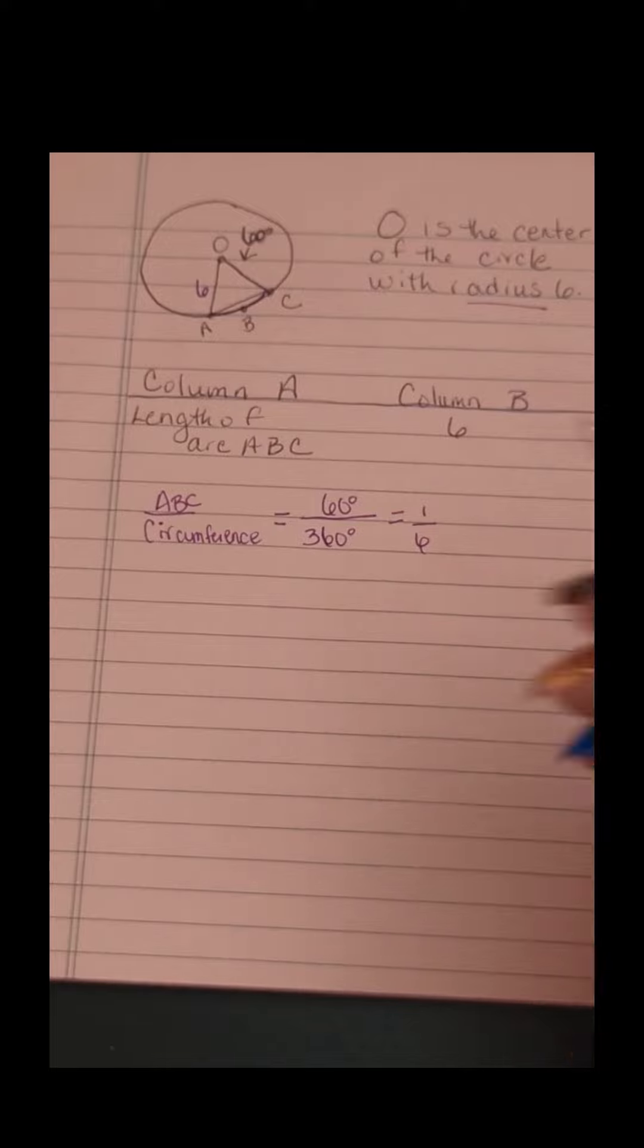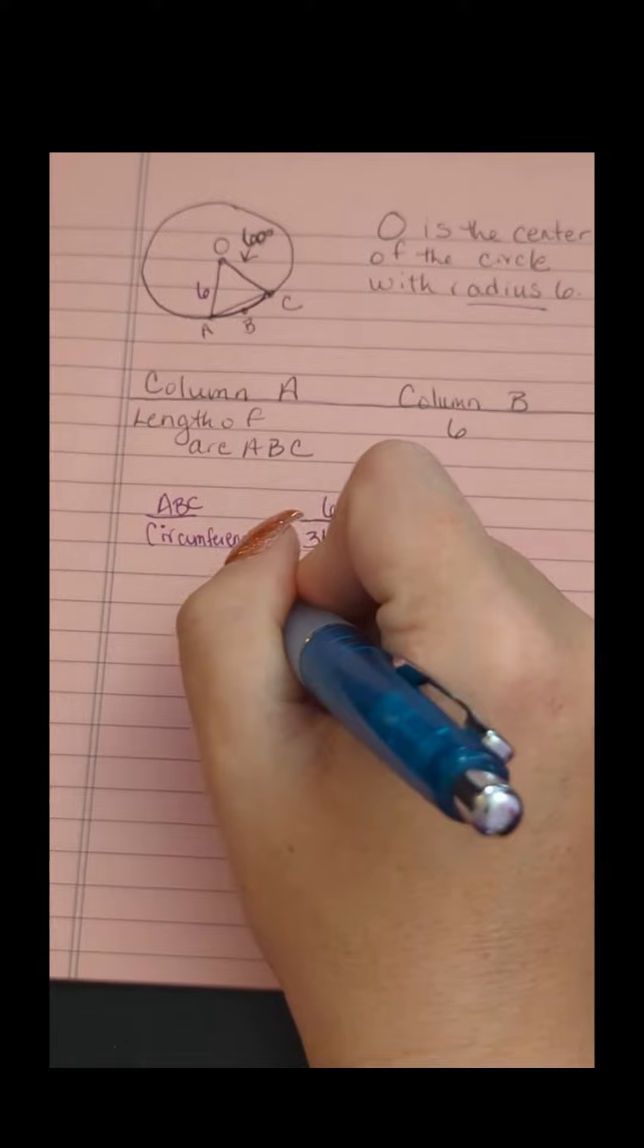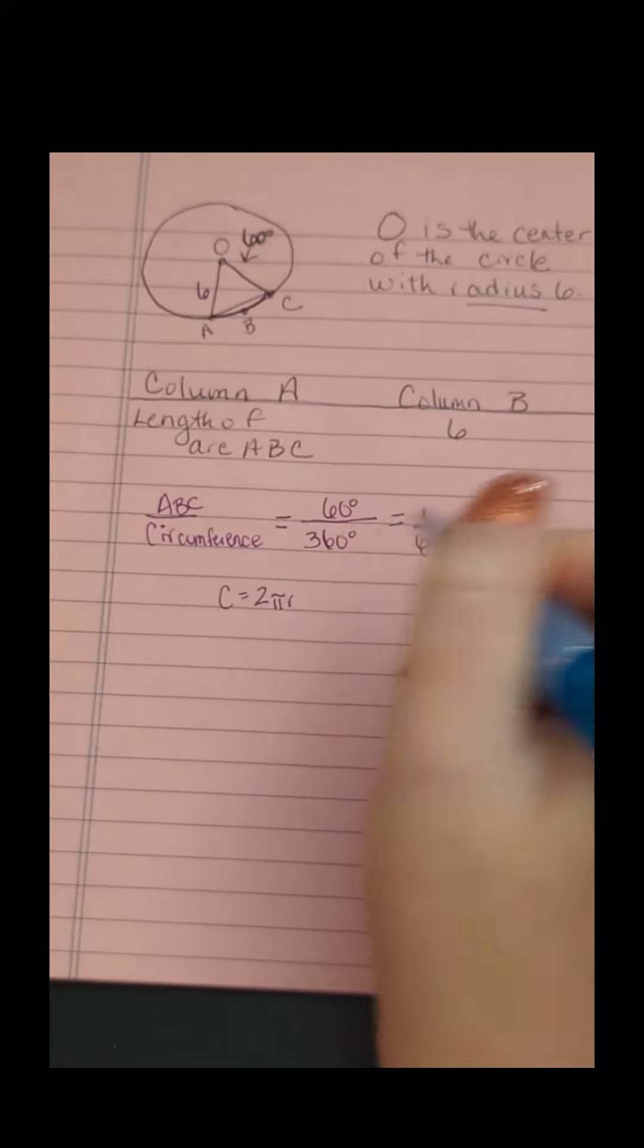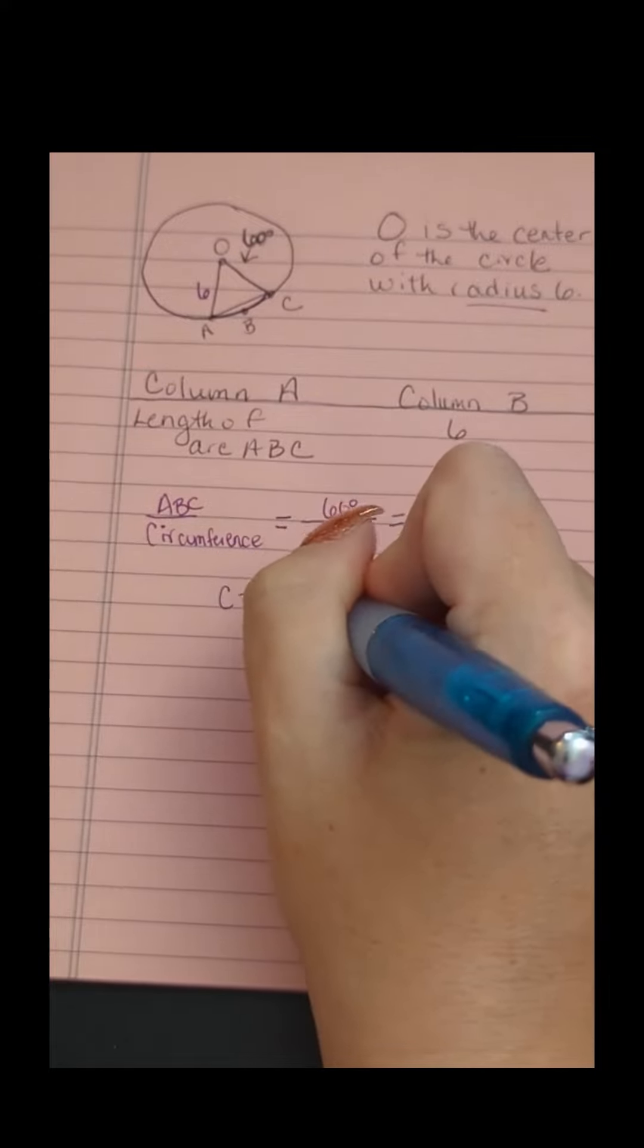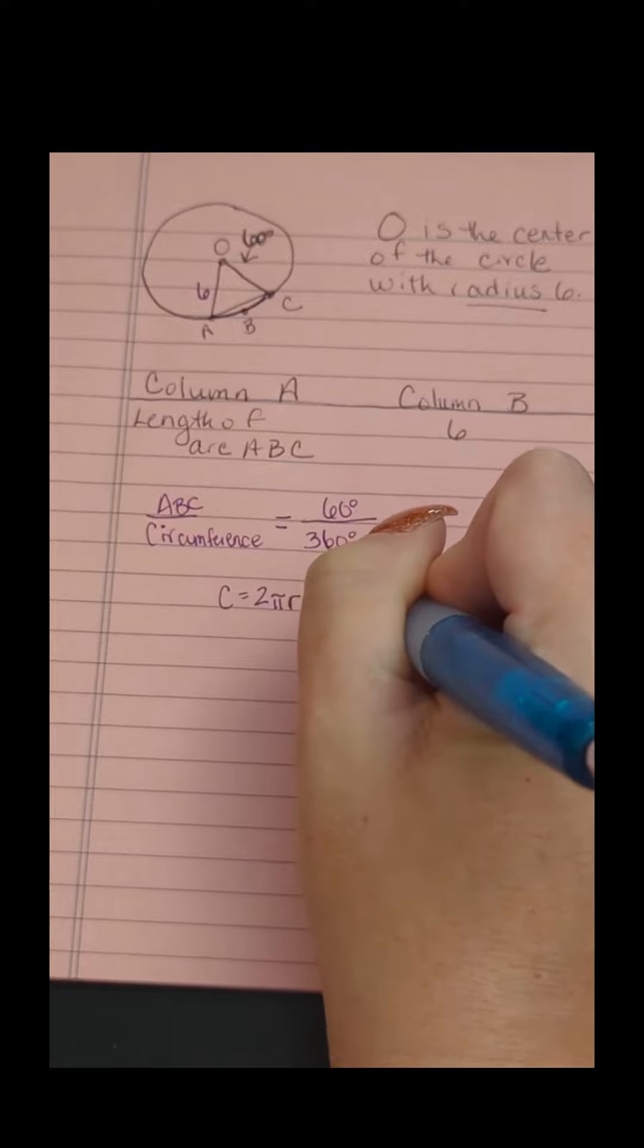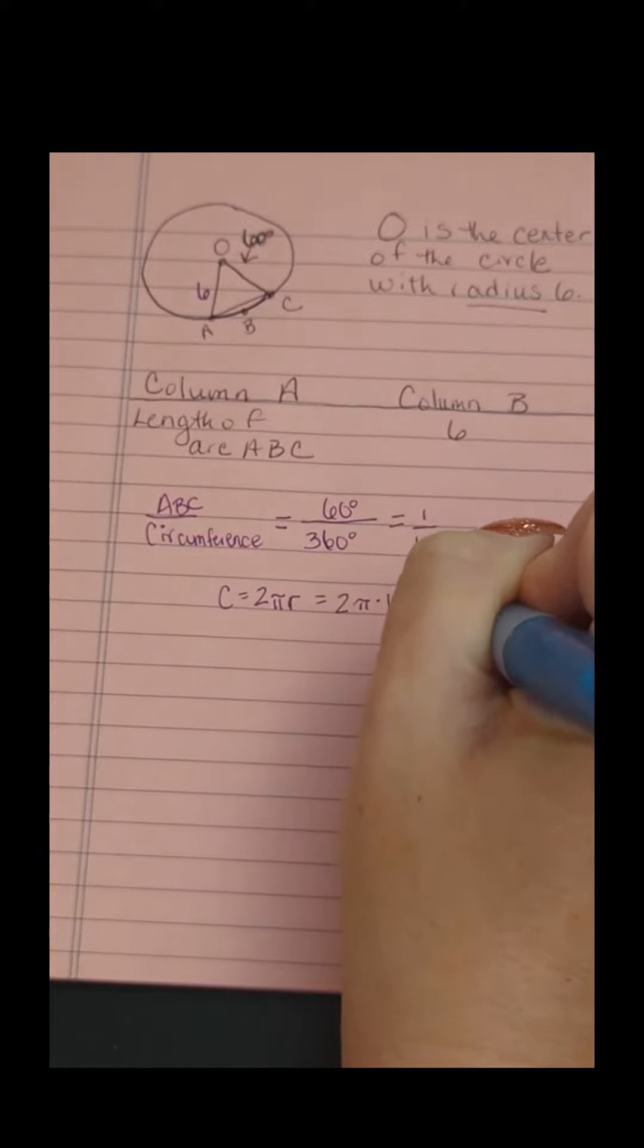What is the circumference then? Circumference of a circle equals 2π times the radius. In this case, our radius is 6, so that means it's 12π.